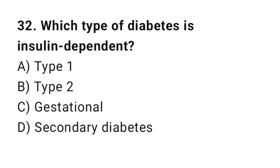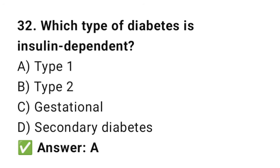Q32: Which type of diabetes is insulin dependent? The right answer is A, Type 1. Type 1 diabetes patients need insulin due to pancreatic failure.